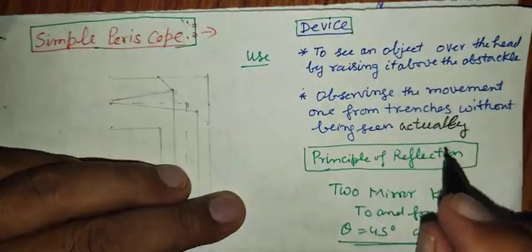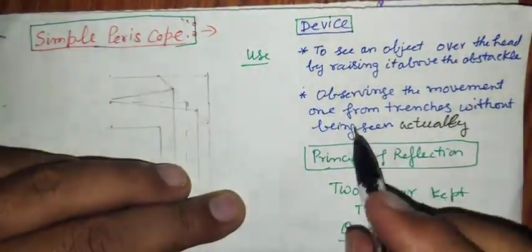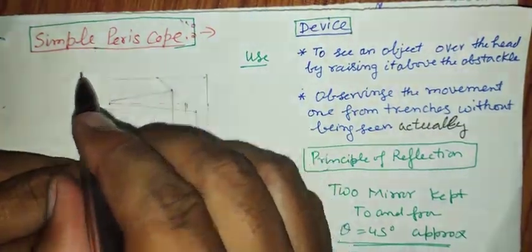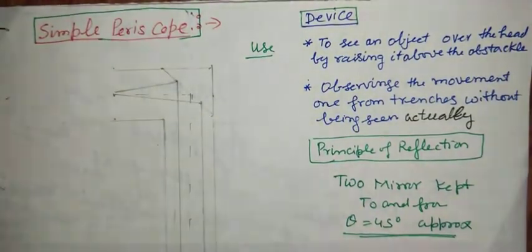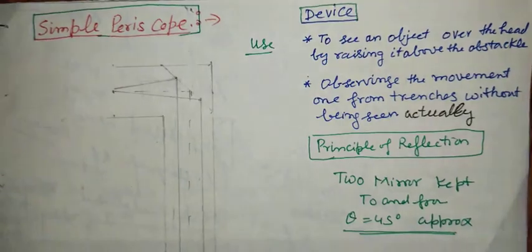The soldiers are hidden in trenches and can see with help of the periscope the actual movement at same size and same distance. So see how it is made.